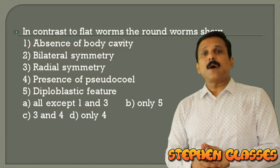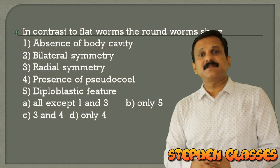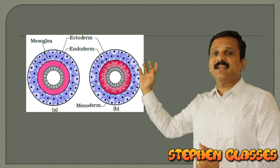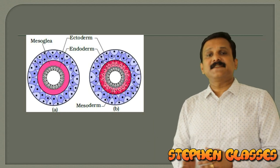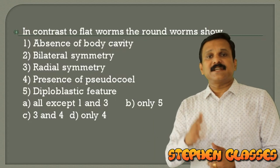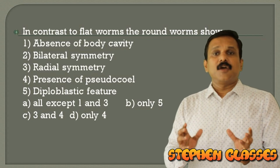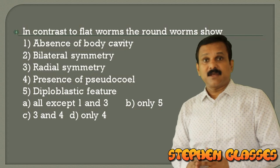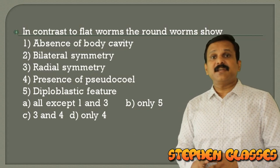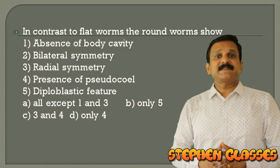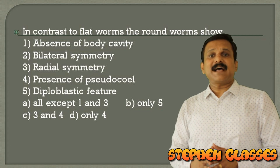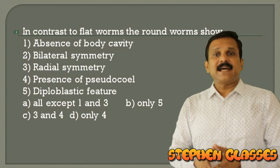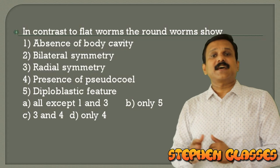Next question: in contrast to flatworms, roundworms show — roundworms (phylum Aschelminthes) have a pseudocoelom. Reviewing the options: absence of body cavity applies to flatworms; bilateral symmetry applies to both; radial symmetry applies to neither; presence of pseudocoelom applies to roundworms; diploblastic feature applies to neither. The only feature belonging to roundworms and not flatworms is the pseudocoelom. Correct answer: option D.